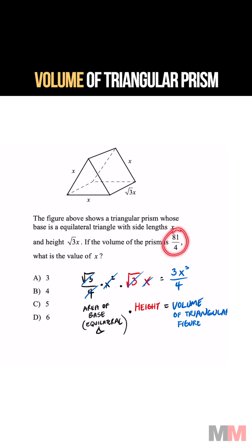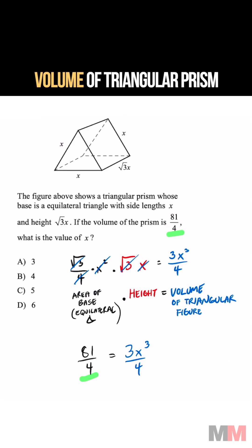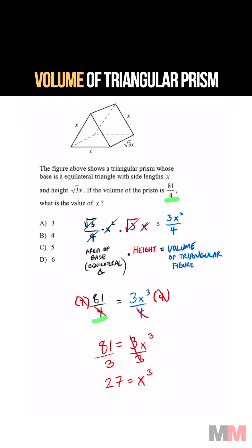Since this represents the volume, we can set this and this equal to each other. So from here, we got to multiply both sides by 4, cancel that out, divide by 3, and finally take the cube root of both sides.